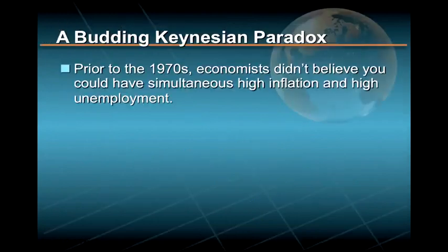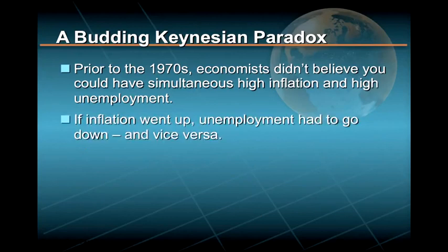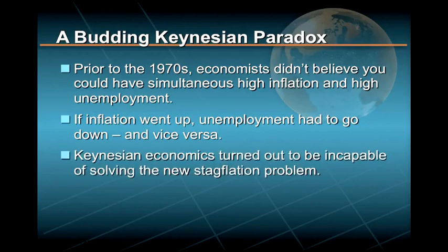Prior to the 1970s, economists didn't believe you could even have both high inflation and high unemployment at the same time — one went up, the other had to go down. The 1970s proved economists wrong on this point and likewise exposed Keynesian economics as being incapable of solving the new stagflation problem.